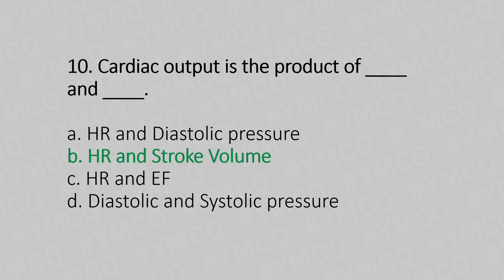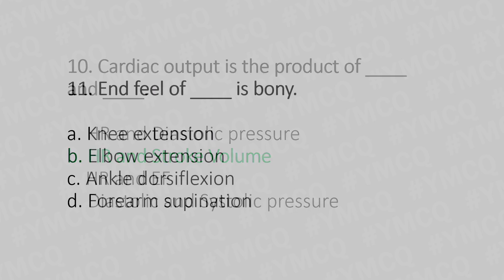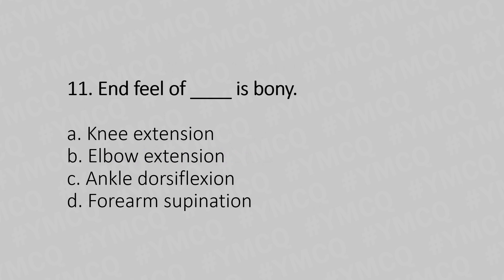Eleventh question: The end feel of which joint is bony? Option A: knee extension. Option B: elbow extension. Option C: ankle dorsiflexion. Option D: forearm supination. The answer is Option B, elbow extension.